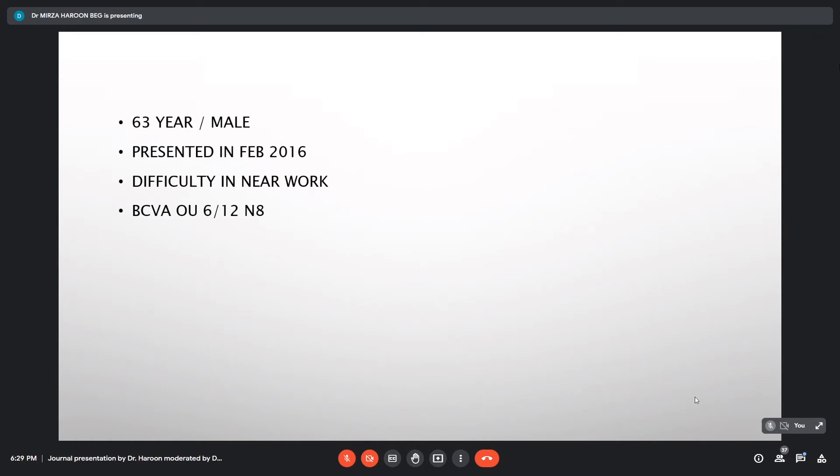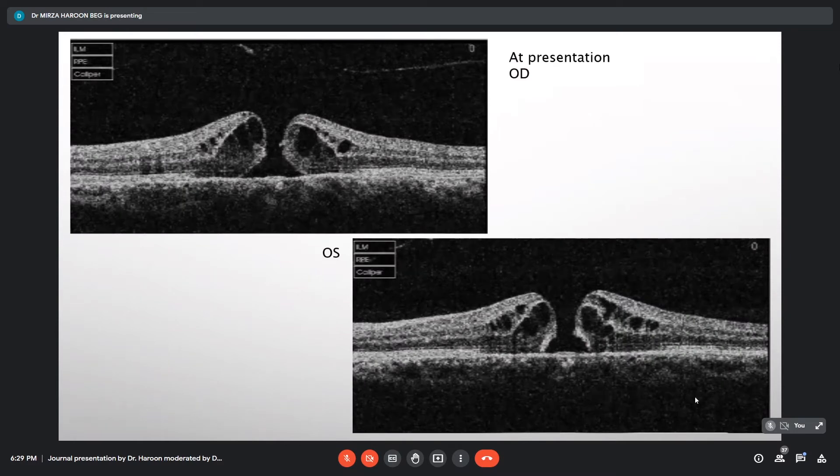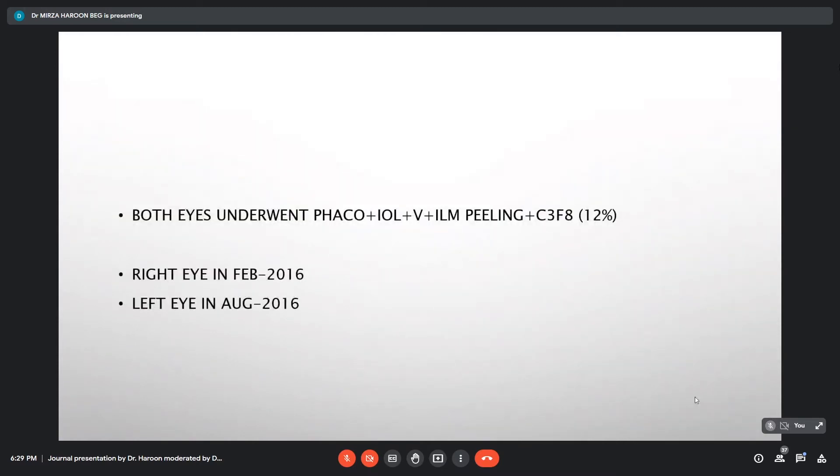His best corrected visual acuity was 6/12 and 6/18. He presented with bilateral full-thickness macular holes, both having some cystic changes associated with it. He underwent cataract surgery along with vitrectomy, ILM peeling, and gas tamponade with C3F8 at a gap of 6 months. Right eye in February 2016 and left eye in August 2016.